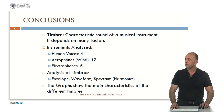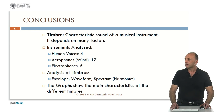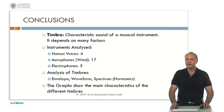As conclusions, timbre is the characteristic sound of a musical instrument and depends on many factors. In this presentation we analyzed human voices — four examples — aerophones, that is wind instruments — 17 examples — and electrophones — five examples. To analyze the timbres we considered the envelope, the waveform, and the spectrum, that is the harmonics. These graphs show the main characteristics of the different timbres. You can find all the information on the website harmonicwheel.com. Thank you very much for your attention.